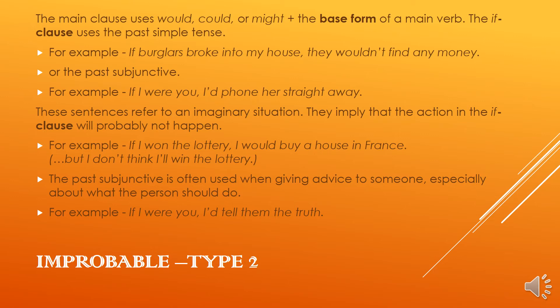This is something in your mind — you don't think you would win the lottery, so you say 'if I won the lottery, I would buy a house in France'. The past subjunctive is often used when giving advice to someone, especially about what they should do. For example, 'if I were you, I'd tell them the truth' — meaning if I were in your shoes, I would tell them the truth. So this is used when giving advice to someone.